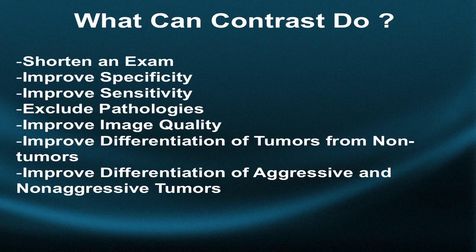What does contrast do? Why do we use it? It can shorten an exam, improve diagnostic specificity and sensitivity, help exclude certain pathologies, and improve image quality — especially on MRI where it improves overall signal. It may improve the differentiation of tumors from non-tumoral lesions, and differentiation of aggressive from non-aggressive tumors. These facts are true to varying degrees with most modalities.